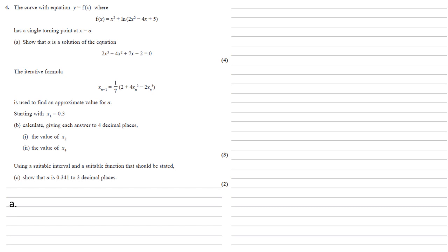For part a, we need to show that alpha is a solution of the equation 2x cubed minus 4x squared plus 7x minus 2 equals 0. For there to be a turning point at x equals alpha, this fits into the equation f'(x) equals 0, because when f'(x) is 0, that's our turning point.